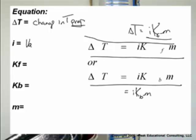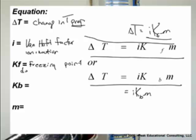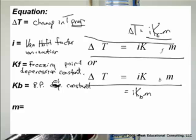i is called the Van't Hoff factor — I also like to think of it as just the ionization factor. K_F is the freezing point depression constant. K_B is the boiling point elevation constant. And m — written as a cursive m — is the molality.